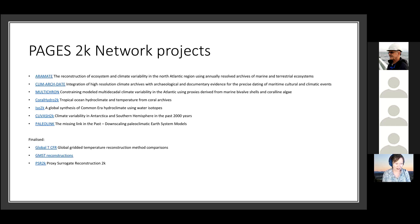We have the Coral Hydro 2K program, looking at tropical climate, tropical corals, temperature and hydrology in the tropical regions. Iso 2K has been pulling together isotope records from all sorts of different proxies from right across the globe — a really huge effort to bring all that data together. Clivash looks at climate variability in Antarctica and the Southern hemisphere in the past 2,000 years. And then PaleoLink, trying to look at the links between paleoclimate data and earth system models that have run paleoclimate simulations.